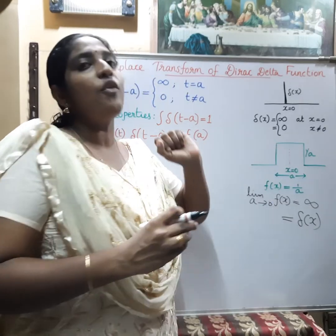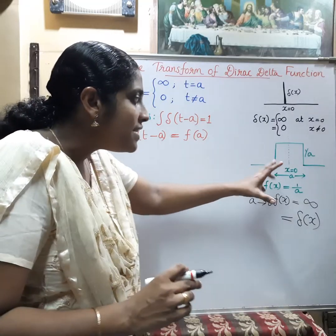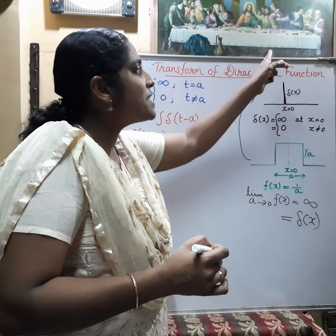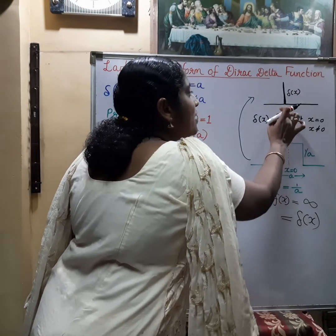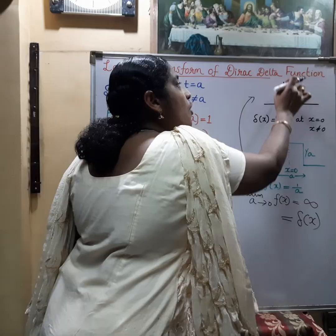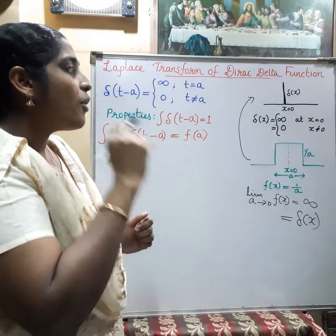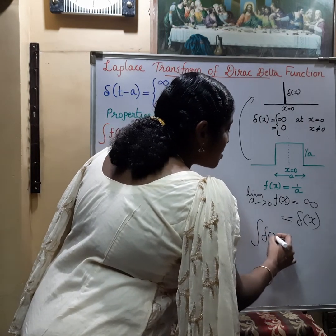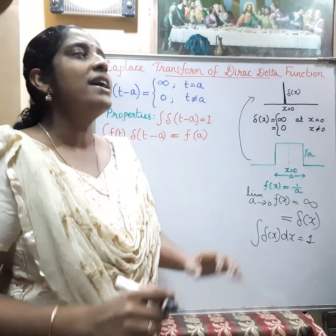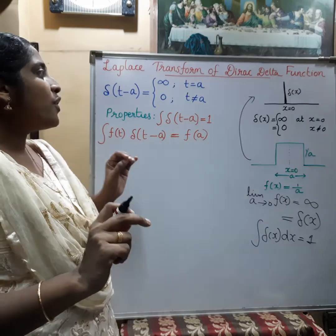Even as the width tends to zero, the area of the pulse must remain 1 — that is, a × (1/a) = 1. So when the square pulse's width becomes zero, it becomes the Dirac delta function: at x=0 the function goes to infinity and comes back to zero. The area under this narrow pulse equals 1. One important property of the Dirac delta function is that the integral of δ(x) dx equals 1. It is mainly used in signal processing and quantum mechanics in physics.